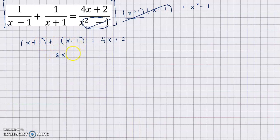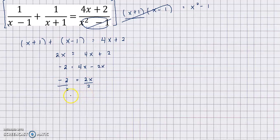Combining similar terms: x plus 1 plus x minus 1 gives 2x, and 1 minus 1 is 0, so the left side is 2x, equal to 4x plus 2. Moving variables to one side: negative 2 equals 4x minus 2x, so negative 2 equals 2x. Dividing both sides by 2 gives x equals negative 1.